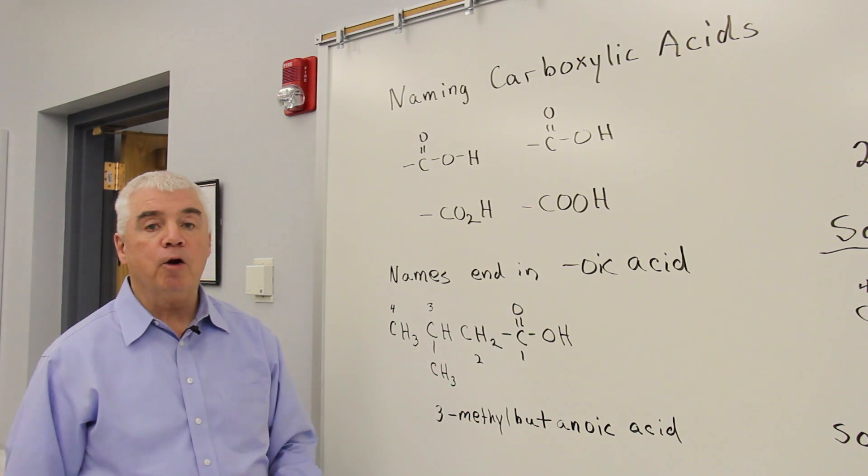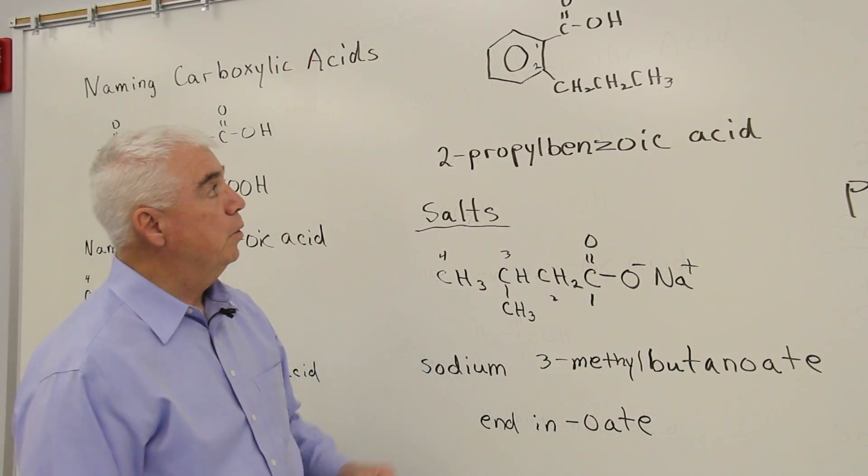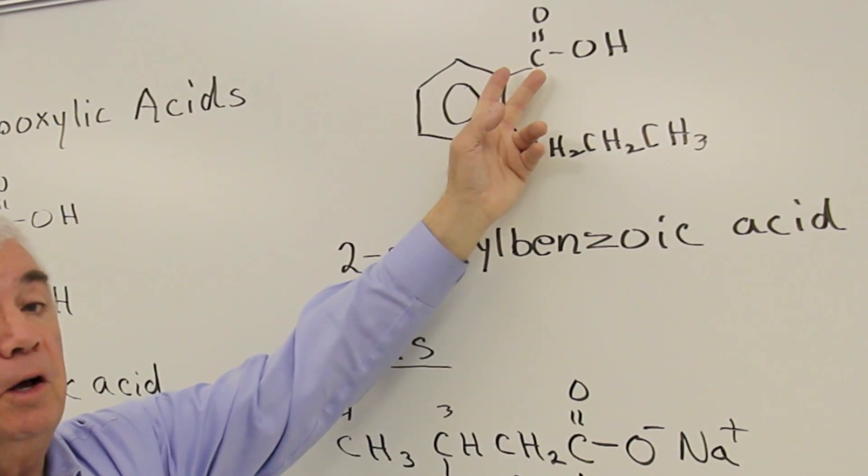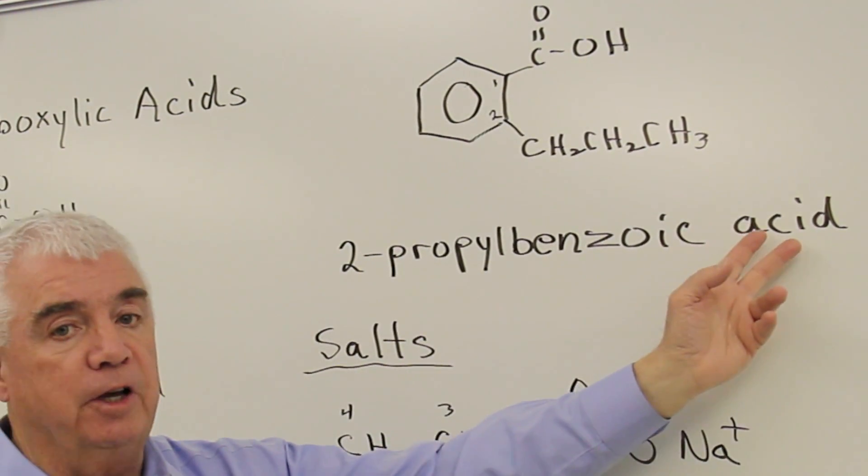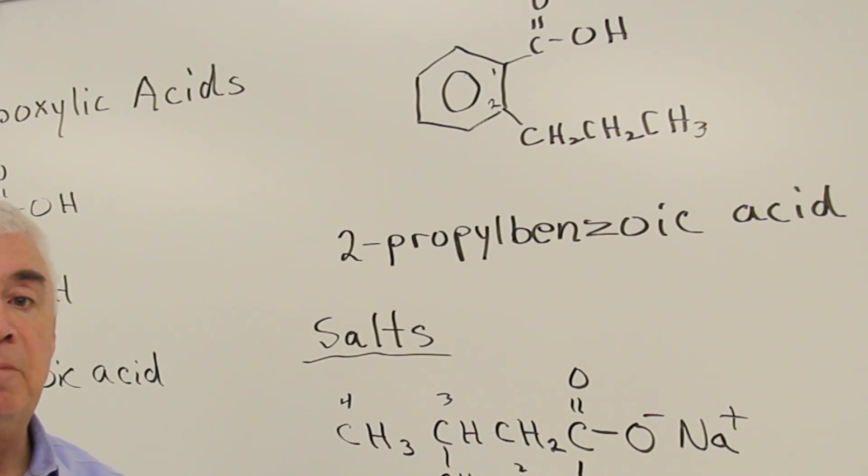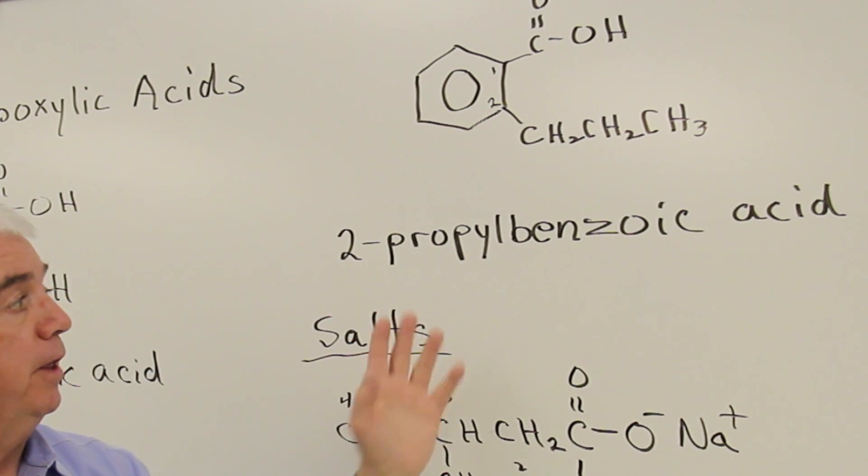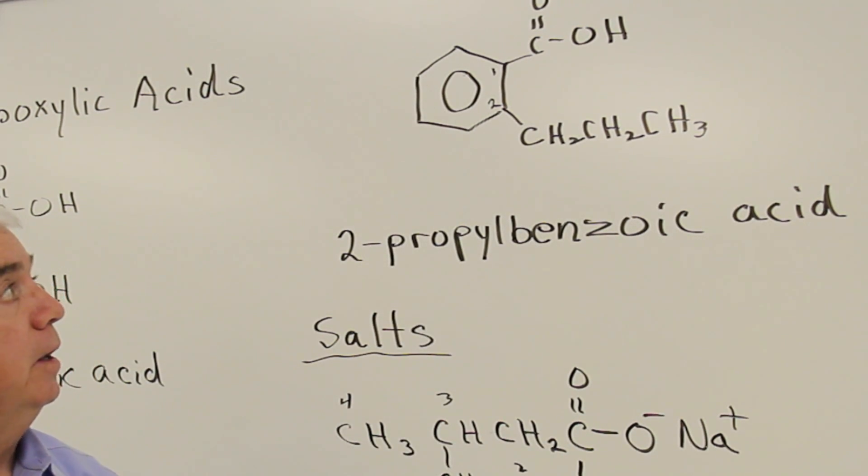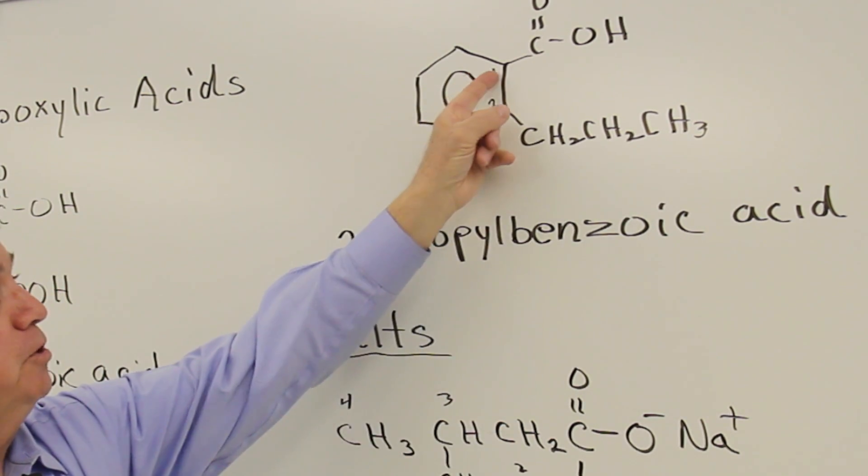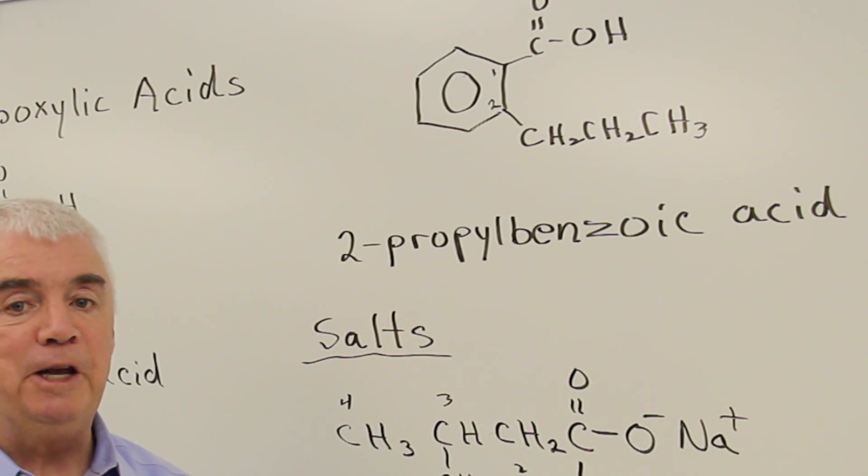Let's look at an aromatic acid. When you have a benzene ring with a carboxylic acid group attached, it's called benzoic acid. And it's a common name, but it was used so commonly they accepted it into the IUPAC system. So when we have a substituted benzoic acid, this ring position would always be number one.